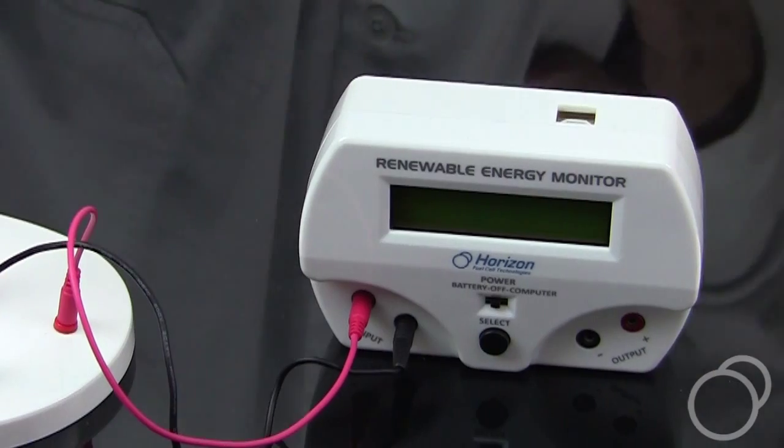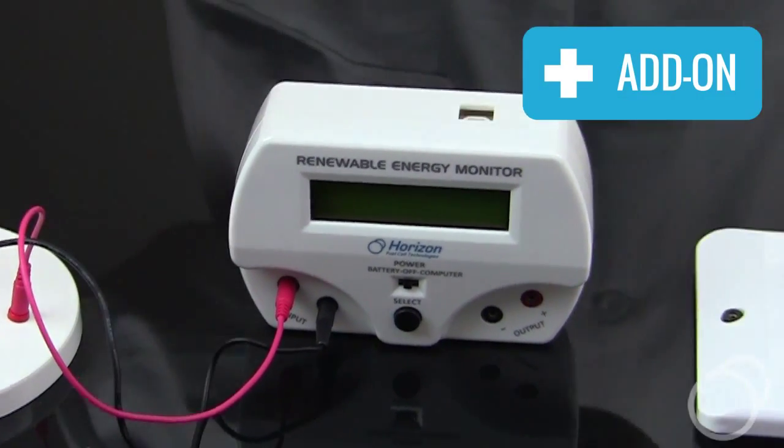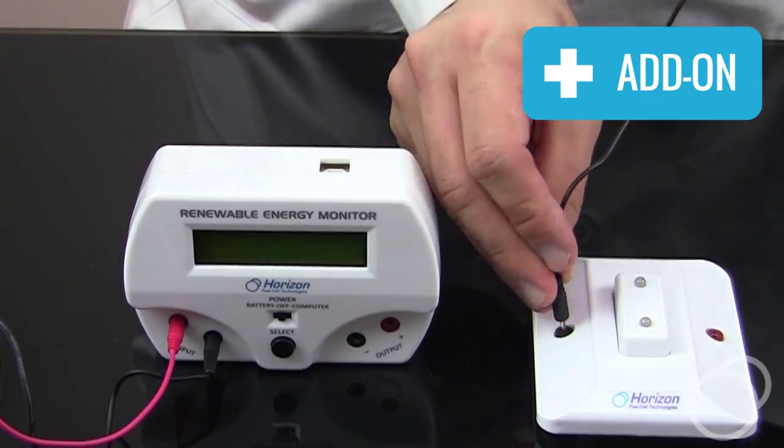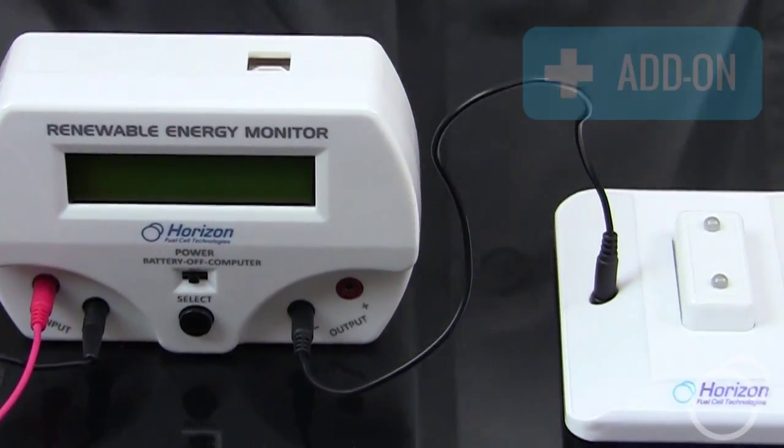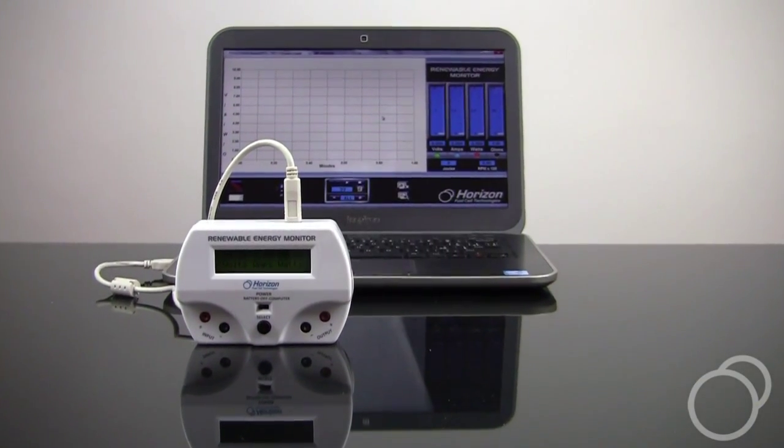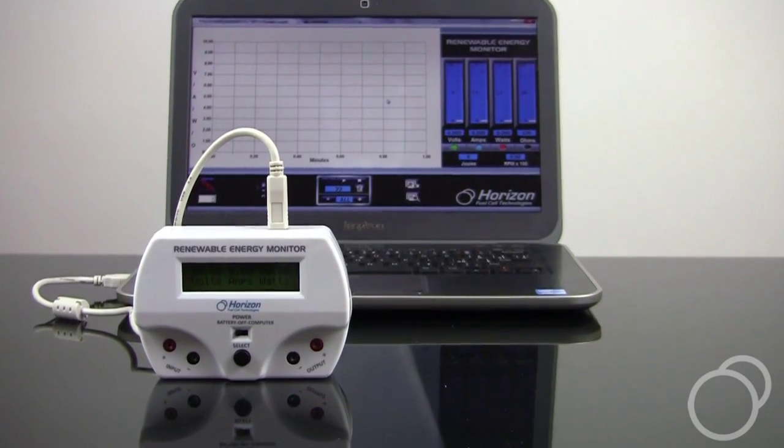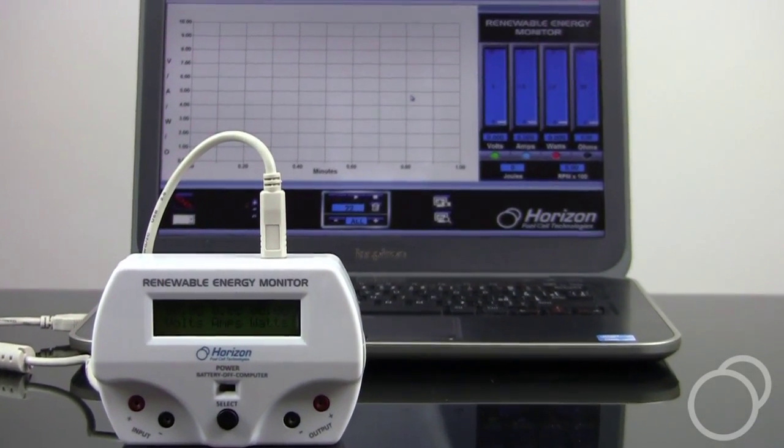When used with the Horizon Renewable Energy Monitor sold separately, the Wind Energy Education Kit can be used to gather real-time quantitative data, such as the amps and volts put out by the generator, or even the revolutions per minute of the turbine.